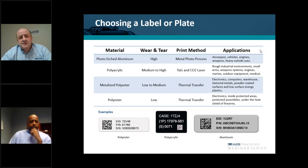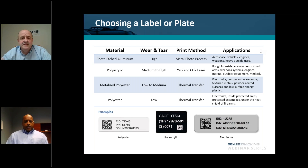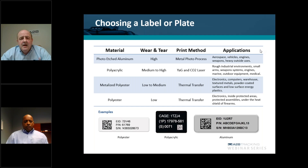If you have assets that will be exposed to outdoors or a more ruggedized environment, at the very least you want to step up to a polyacrylic material. Polyacrylic is probably the most popular material used with a laser etched marking method. It gives you the durability needed for outdoor UV exposure, rough industrial environments, small arms and weapon systems, engines, oil splashing against the asset, marine equipment, and salt water splashing. These are all situations that can corrode the material, which is why polyacrylic — with its medium to high wear and tear rating — is suited to handle those conditions.